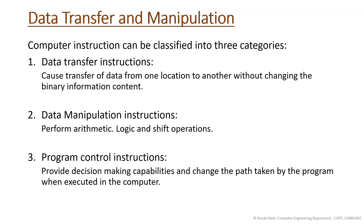Computer instructions can be classified into three categories: data transfer instruction, data manipulation instruction, and program control instruction. Data transfer instruction transfers data from one location to another without changing the binary information content. Data manipulation instruction performs arithmetic, logical, or shift operations on data, meaning the data will be changed.